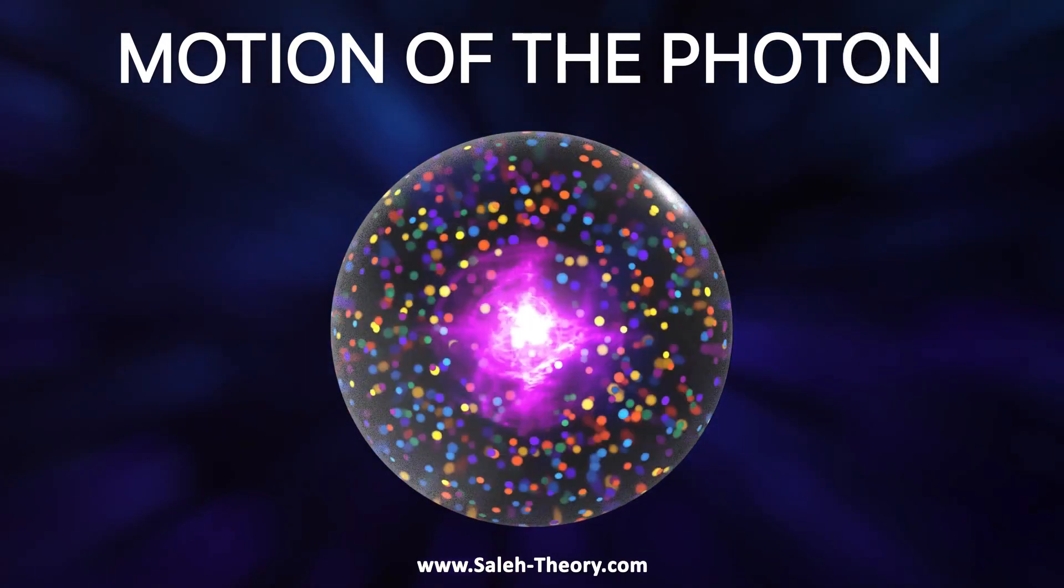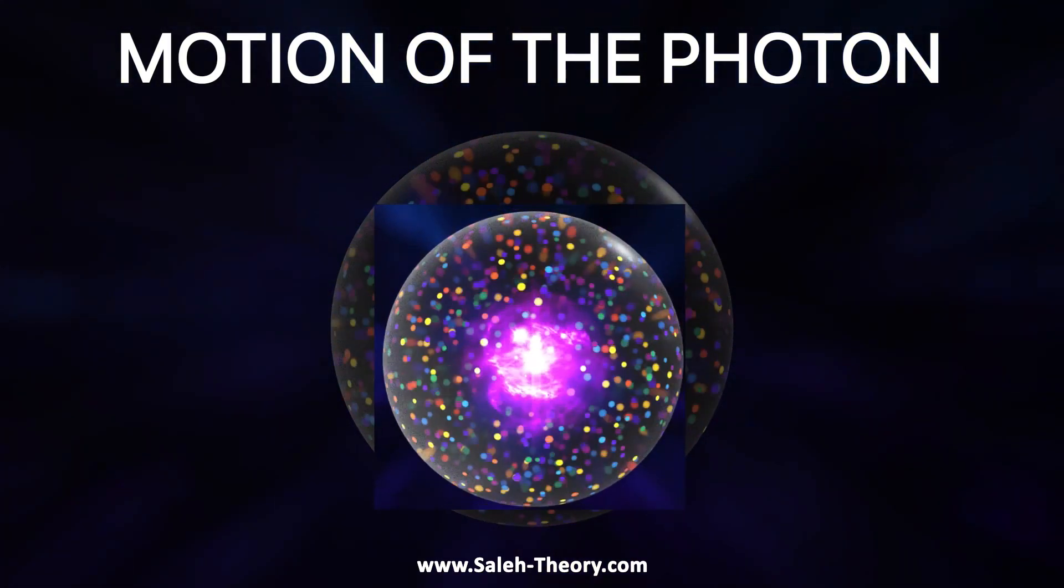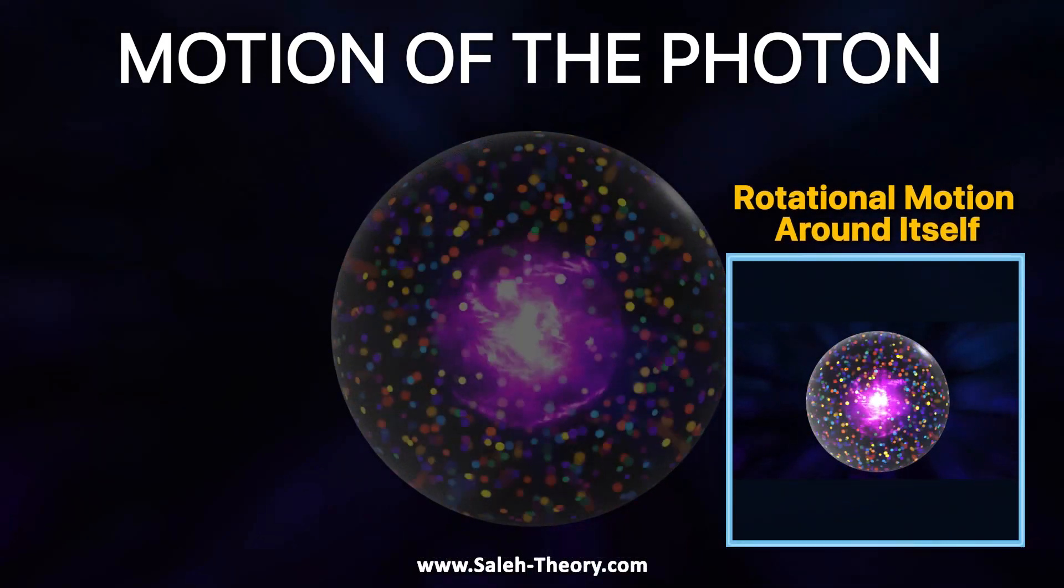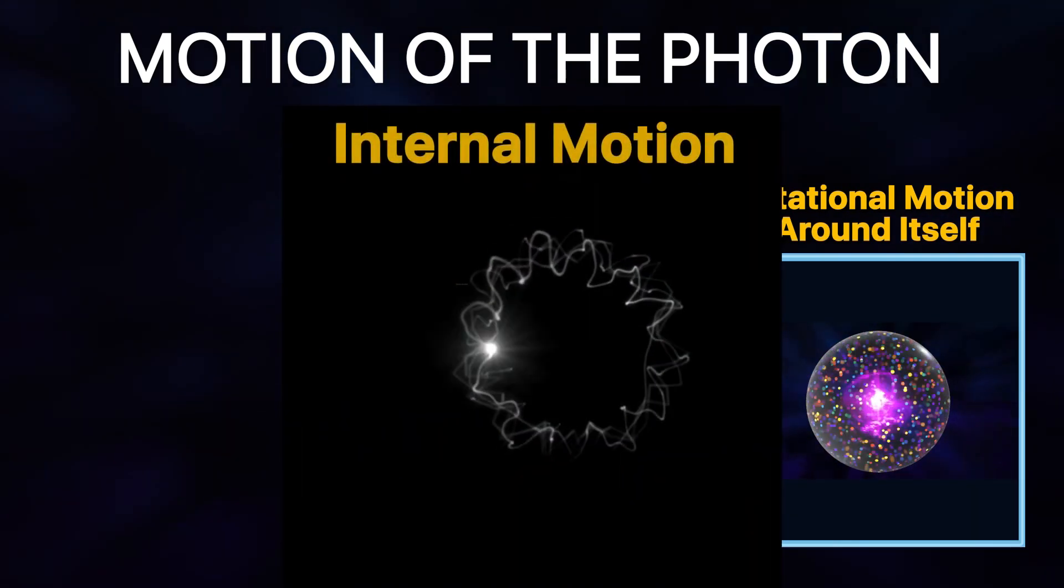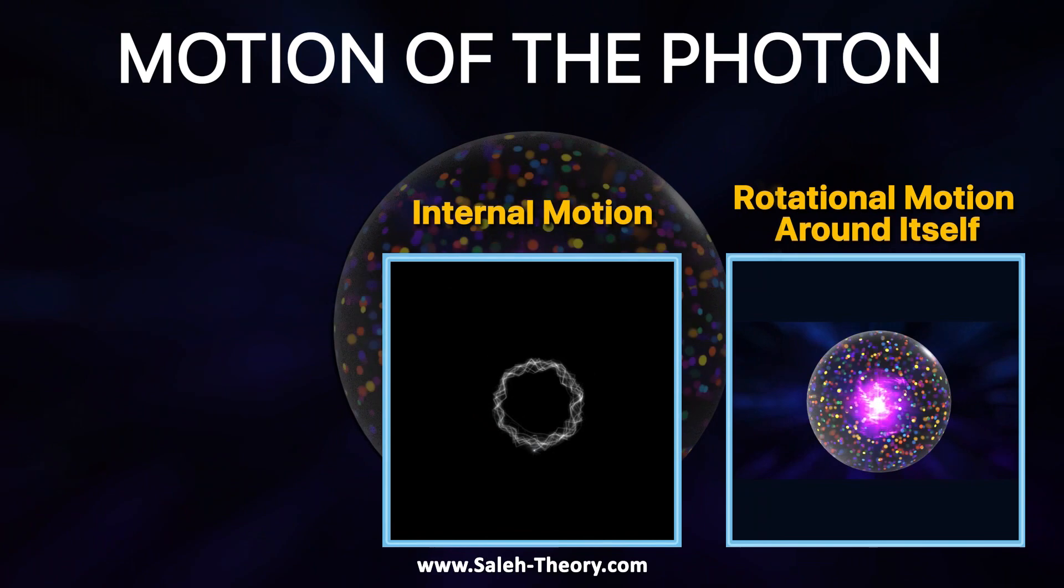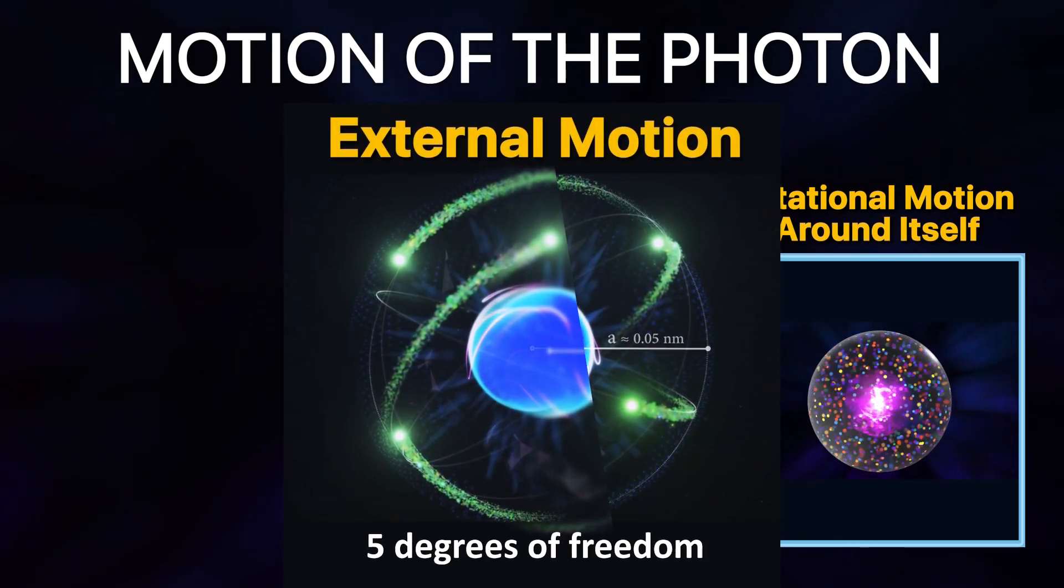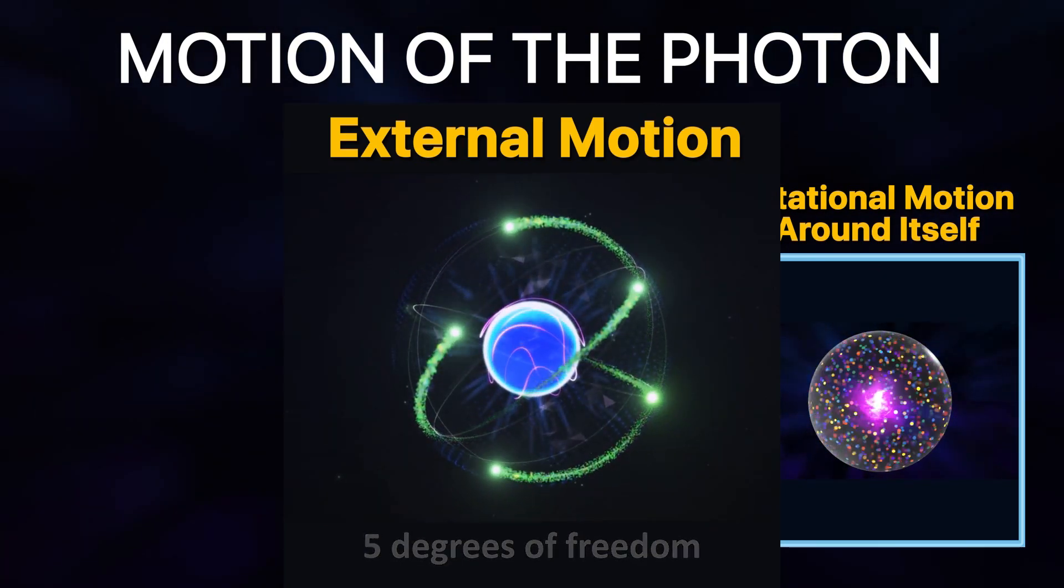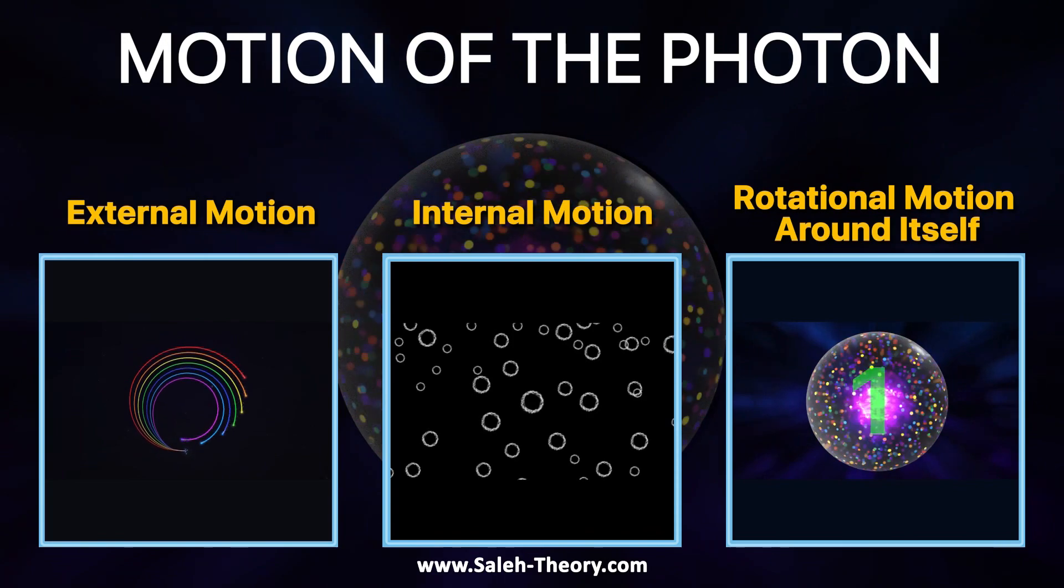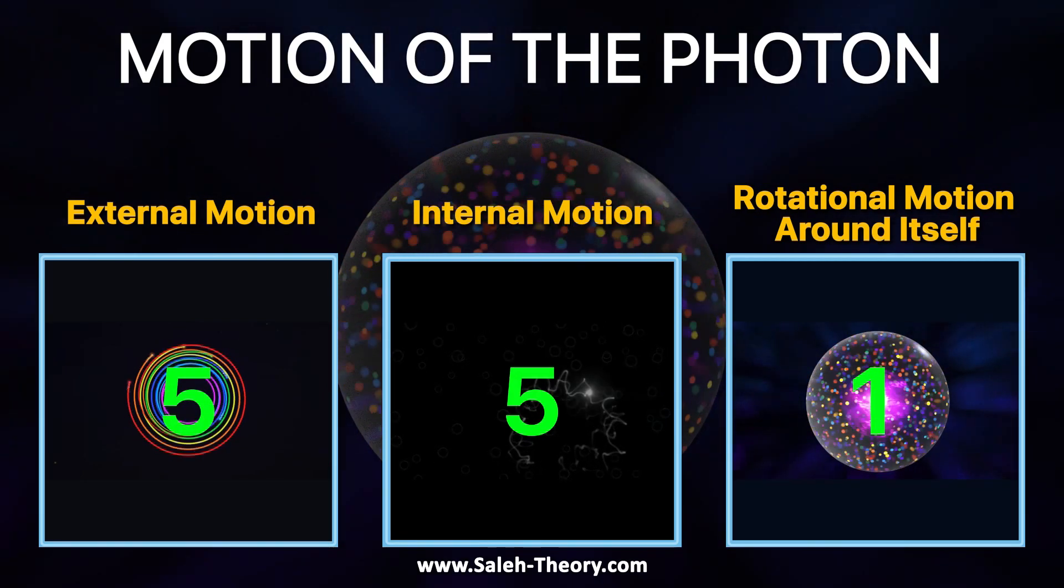As a result, the motion of photon when leaving the electron can be divided into three motions. In total, each photon can have a motion with 1 plus 5 plus 5 degrees of freedom, which in fact can be said that the photon is the superstring as we mean.